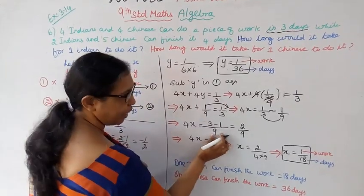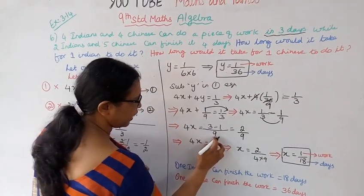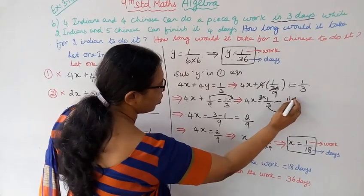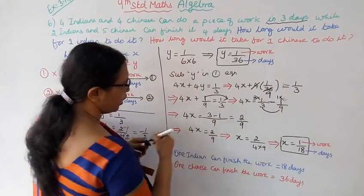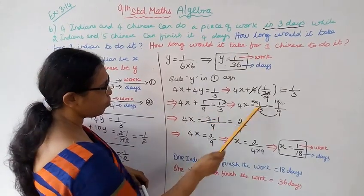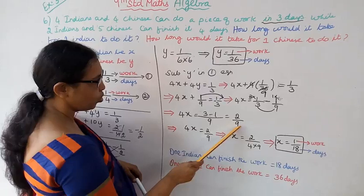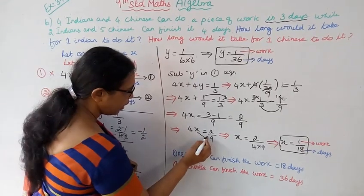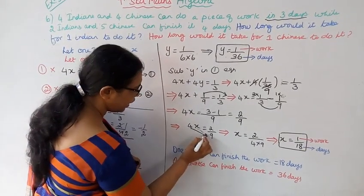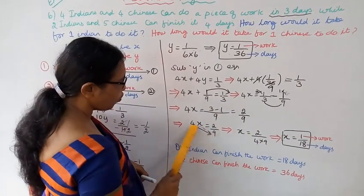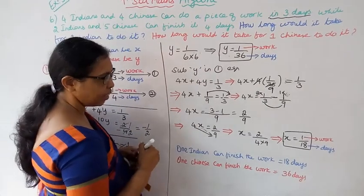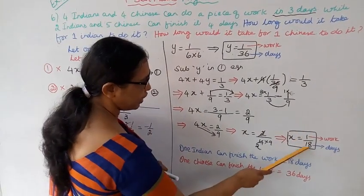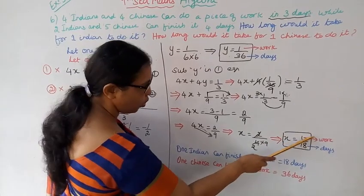Finding the LCM of 3 and 9, which is 9. So 3 minus 1 equals 2. Therefore 4x equals 2 by 9. Dividing both sides by 4: x equals 2 by 36, which simplifies to 1 by 18. The Indian worker takes 18 days.